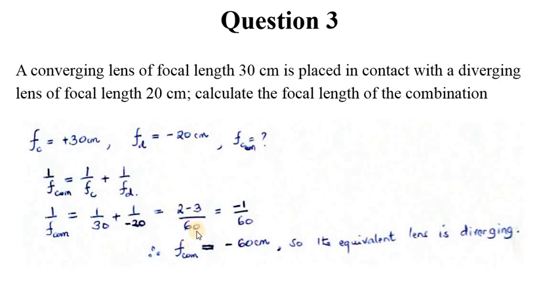Remember we're talking about 1 over F, so therefore F combined is simply negative 60, to mean that we have an equivalent lens which is a diverging lens of focal length 60 centimeters.